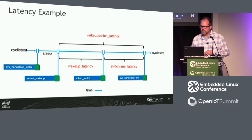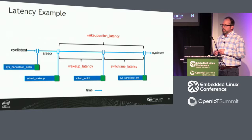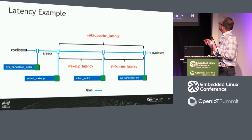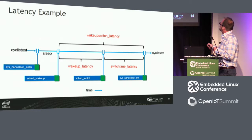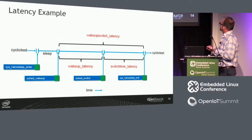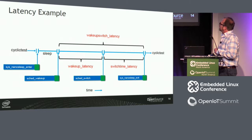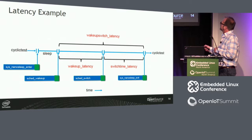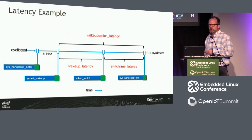To finish off the example: the thread is back on the CPU but still needs to exit the system call before doing useful work. The latency between sched_switch and the nanosleep syscall exit is called switch_time_latency. The RT patch set also does combination latencies — wakeup_switch_latency is a combination of these two — and we should be able to do that as well with the enhancement we're talking about.